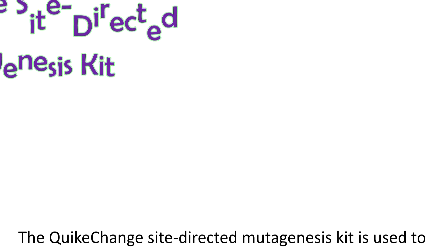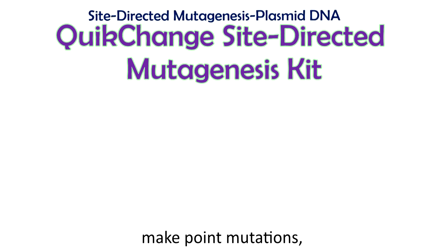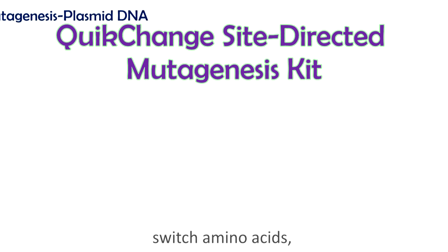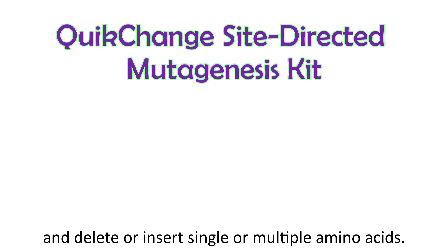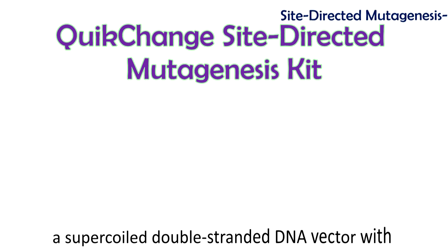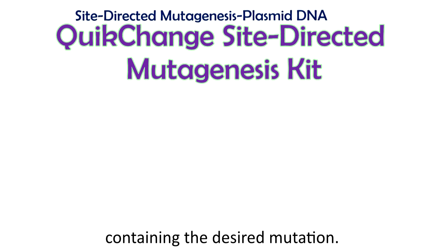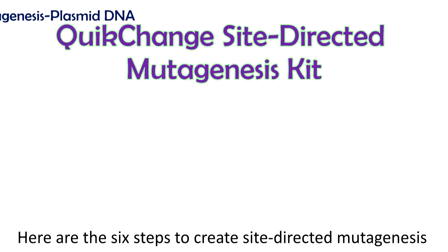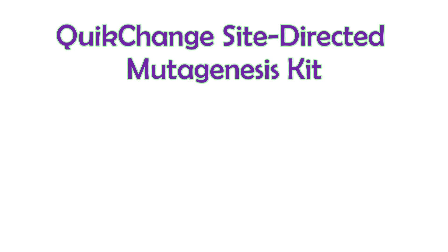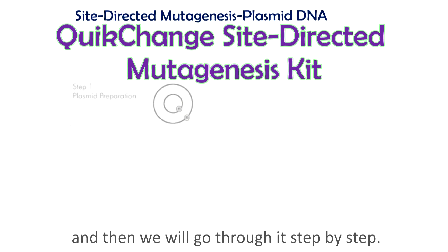The QUIKCHANGE site-directed mutagenesis kit is used to make point mutations, switch amino acids, and delete or insert single or multiple amino acids. The basic procedure utilizes a supercoiled double-stranded DNA vector with an insert of interest and two synthetic oligonucleotide primers containing the desired mutation. Here are the six steps to create site-directed mutagenesis by using this commercial kit.